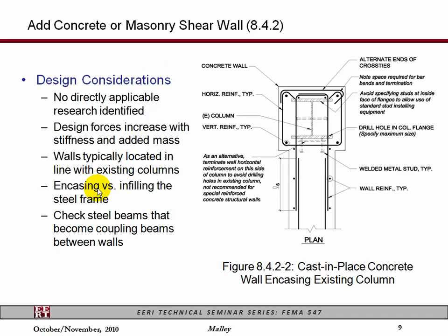Another approach would be to add strength and stiffness with the addition of a masonry or concrete shear wall. What we're showing here is a plan view of putting a shear wall right on a frame line where the steel column becomes embedded within a new shear wall and then becomes part of the chord or the overturning resistance of the new shear wall. Some issues you have to deal with are getting the rebar through and properly tied into the system so that it can act compositely, drilling through the steel flanges to get rebar through, and detailing how you tie the boundary elements to make that work.